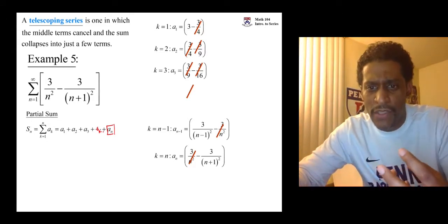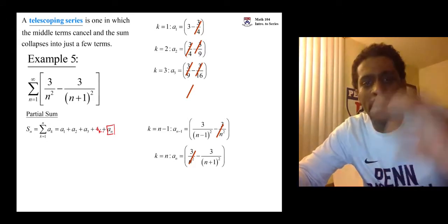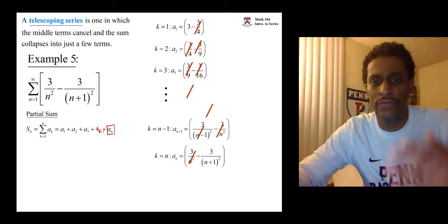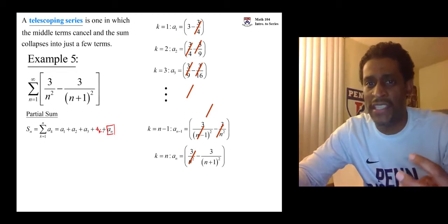And then at the end, we're not writing the previous term n minus 2, but it's going to cancel the same way those other guys cancel. There's collapsing happening.